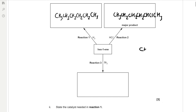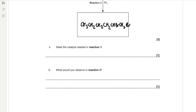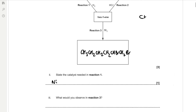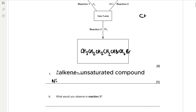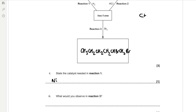Hex-1-ene is reacting with bromine. We're not going to form a major or minor product — it would just be 1,2-dibromohexane. The catalyst needed in reaction 1 is going to be a nickel catalyst. In reaction 3, we've got bromine reacting with an alkene, and that's going to decolourise the bromine water.